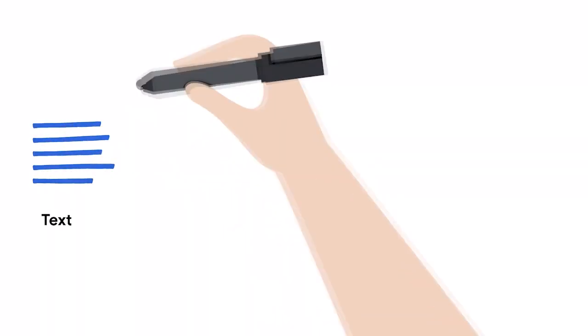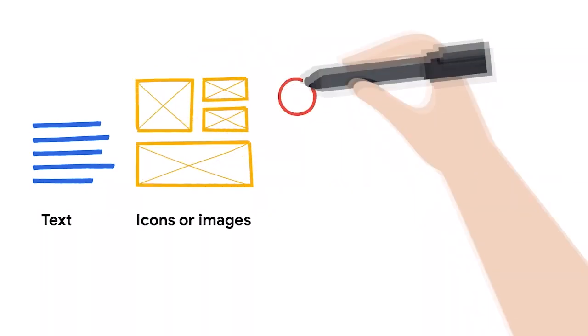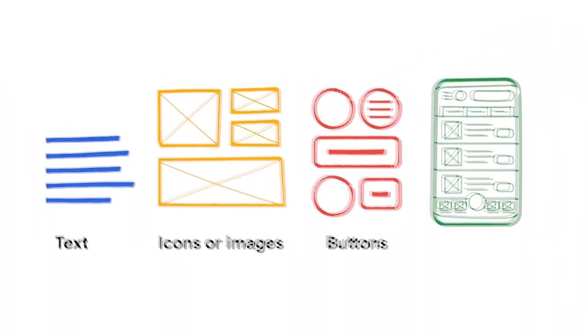There are two methods designers can use when wireframing: paper or digital. I normally start sketching wireframes on paper and later switch to digital — this allows me to work through many iterations faster and throw away wires that aren't working. It's a good idea to implement industry standards, like representing text with horizontal lines, icons or images as squares with an X, and calls to action as rectangles or circles.